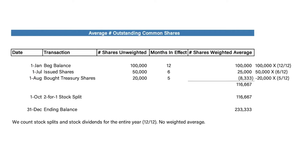To find the denominator for basic EPS — the average number of outstanding common shares — we need to find the weighting of each transaction. I recommend solving these calculations using a chart. We write the date the transaction occurs, the type of transaction, the number of shares before weighting, the number of months it was in effect, and then find the weighted average by multiplying by months in effect over 12.